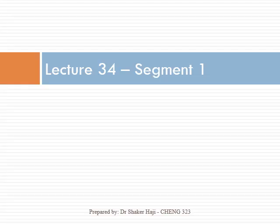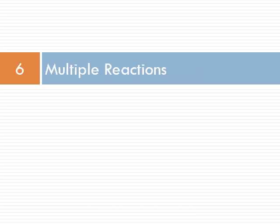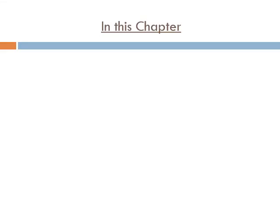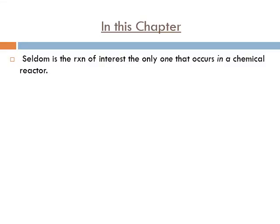Welcome to lecture 34. Today we're going to start chapter 6, which is about multiple reactions. In chapter 4, we learned how to design isothermal reactors mainly running single reactions. We talked about multiple reactions, but now we're going to concentrate in this chapter on multiple reactions.